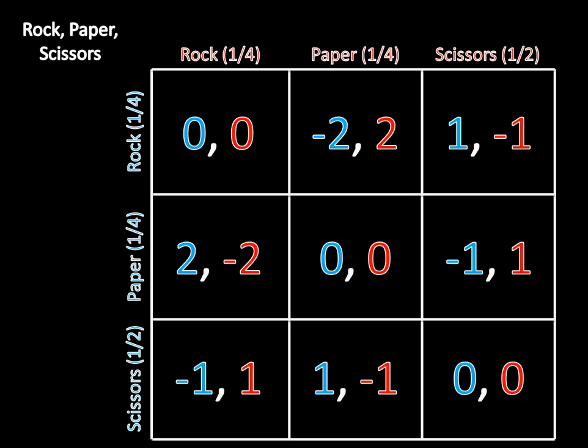Alright, so we have found the mixed strategy Nash Equilibrium for this particular modification of rock-paper-scissors. In the textbook in Lesson 3.6, I actually solve for this in a general way using variables instead of numbers, so you can get a really clear picture of what goes on in rock-paper-scissors based off of that. Outside of that, we are officially done with this unit. I hope you enjoyed it, and I will see you in the next video.